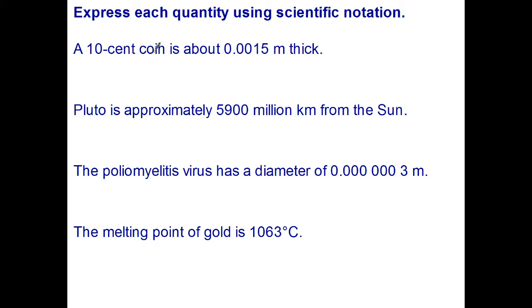So a 10-cent coin in Australia is about 0.0015 meters thick. To write that in scientific notation, I have to move the decimal point after the first non-zero digit, so that's going to become 1.5 times 10 to the power of negative 3, since I moved it three places.